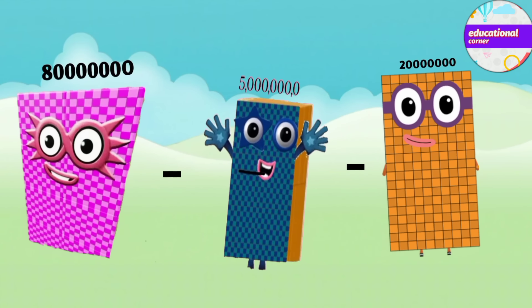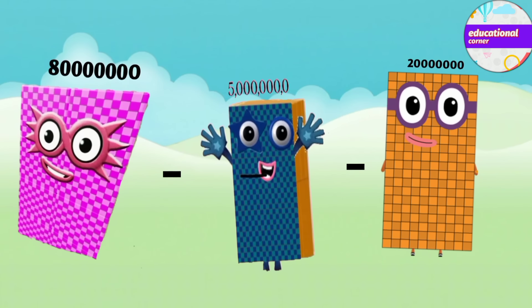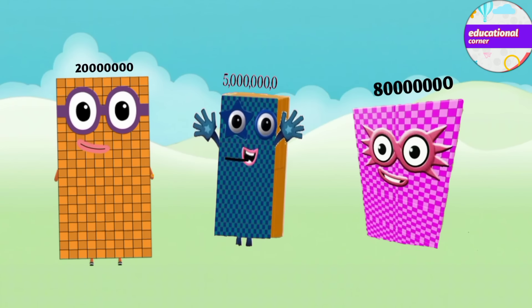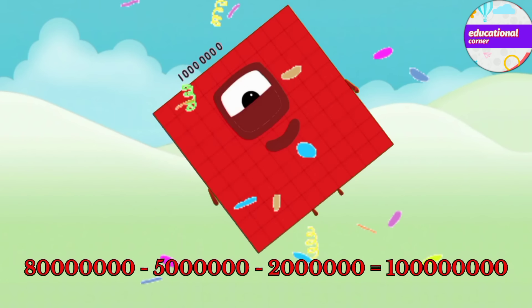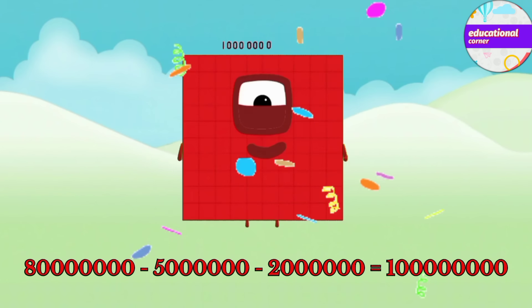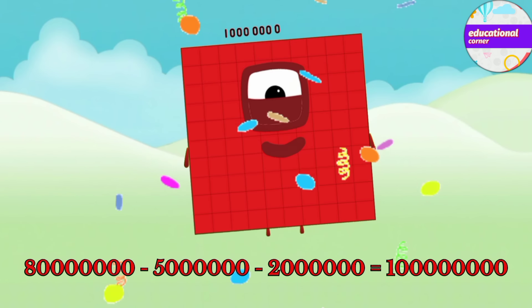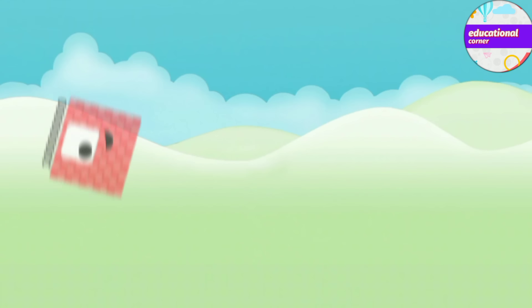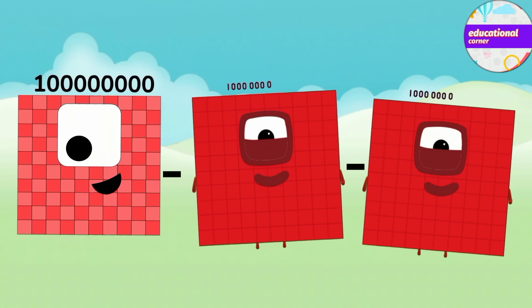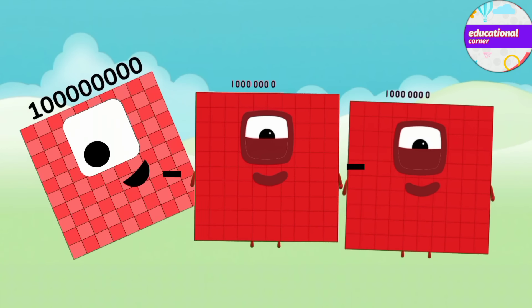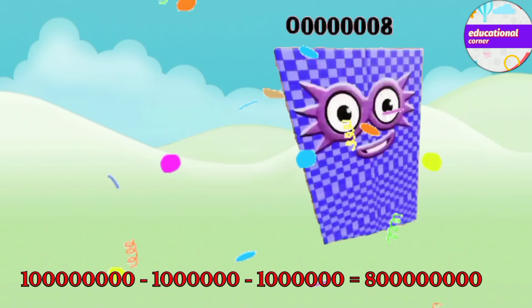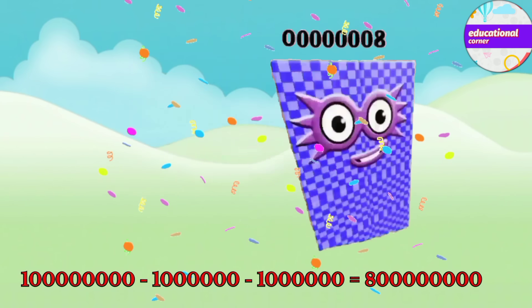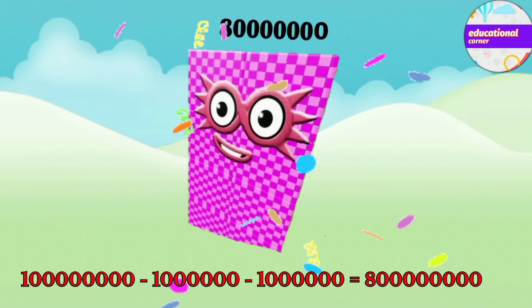80,000,000 minus 50,000,000 minus 20,000,000 equals 10,000,000. 100,000,000 minus 10,000,000 minus 10,000,000 equals 80,000,000.